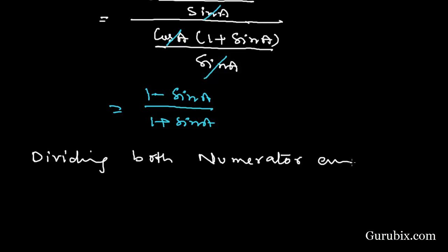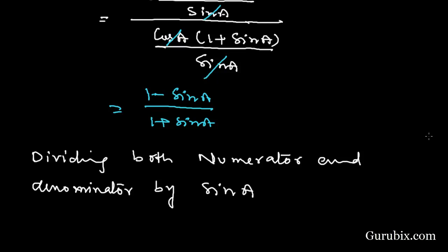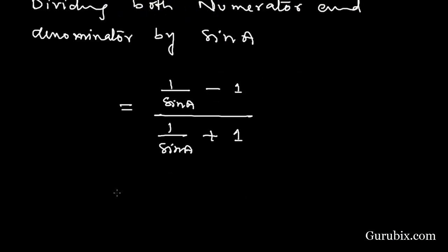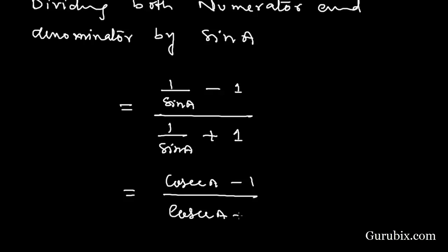After cancellation, we have (1 over sin a minus 1) over (1 over sin a plus 1), which equals (cosec a minus 1) over (cosec a plus 1). This is equal to the right hand side. This is the solution of the question. Thank you.